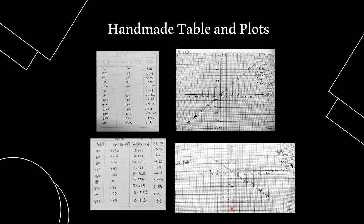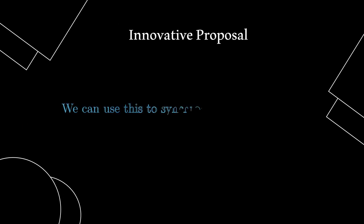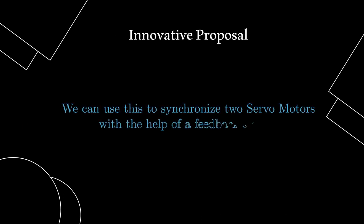In the lab we were asked by our professor to think about an innovative idea which we can perform using the given apparatus. My innovative idea is that we can use this to synchronize 2 servo motors with the help of a feedback system. This will give us better control over the 2 servo motors when they are required to run synchronously for any purpose.